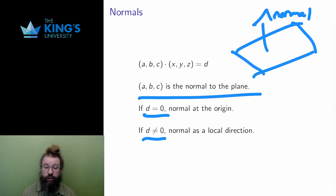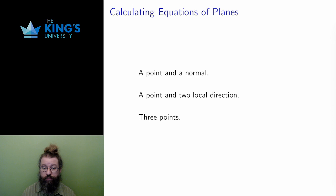This gives an algorithm for finding the equation to a plane. I need to construct the normal, a, b, c, and the extra constant, d. I can do this from three different starting points: starting with a point and a normal, starting with a point and two local directions, or starting with three points.